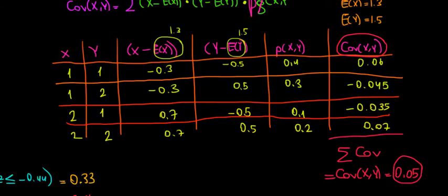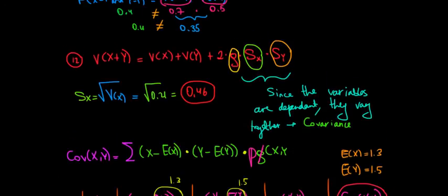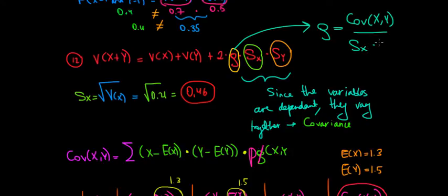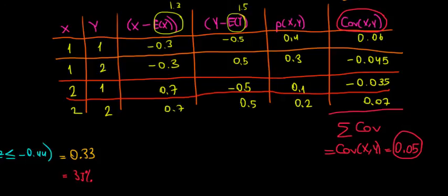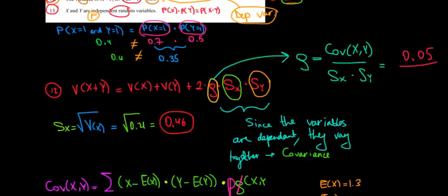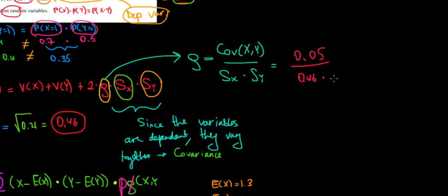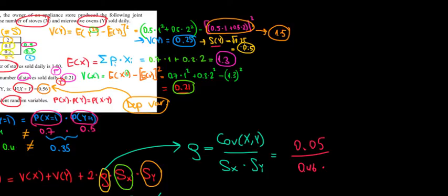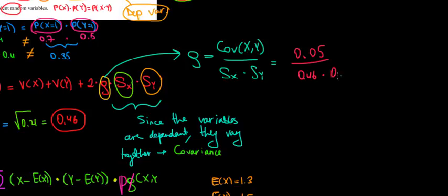Now that we have the covariance, we can calculate the correlation. The correlation is equal to the covariance between x and y divided by the standard deviation of x times the standard deviation of y. The covariance is 0.05, the standard deviation of x is 0.46, and the standard deviation of y is 0.5. So: 0.05 divided by (0.46 times 0.5) gives a correlation coefficient of 0.22.